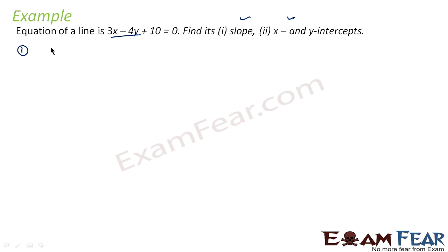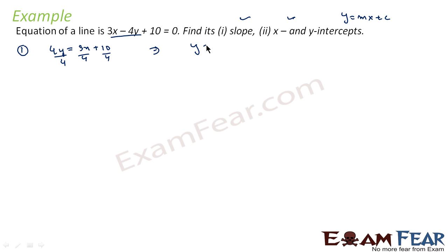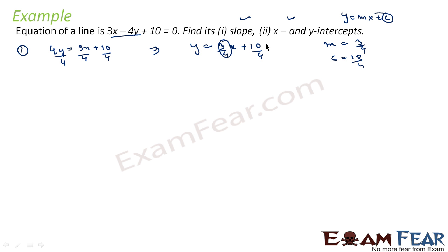This equation we can write as 4y = 3x + 10. Since the equation is of the form y = mx + c, we have to make y independent of any coefficient, so we divide everything by 4. We get y = (3/4)x + 10/4. Comparing with y = mx + c, with x we have 3/4, so m = 3/4, and c = 10/4. Our answer is m = 3/4.